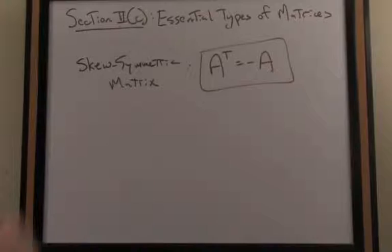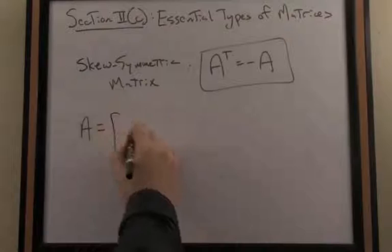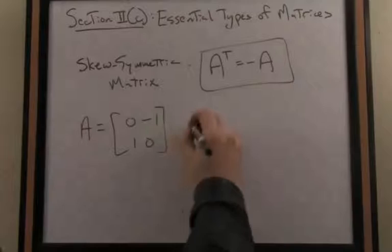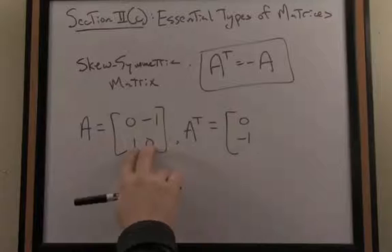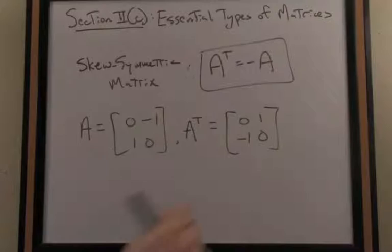For example, just to make that concrete, if we consider the matrix, let's say A is 0, negative 1, 1, 0. If I take the transpose of A, I then take row 1 and form column 1 with that, so that would become 0, negative 1, move on to row 2 and form column 2 with that. A transpose is the negative of the original matrix, so that is a skew-symmetric matrix.